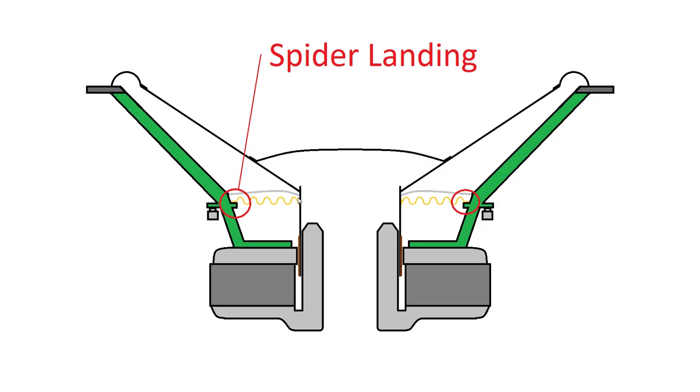Our next thing here is where the spider connects to the frame. It is called the spider landing. And once again, some baskets have multiple spider landings, depending on what kind of soft parts can be put into them. And sometimes both spider landings are used.